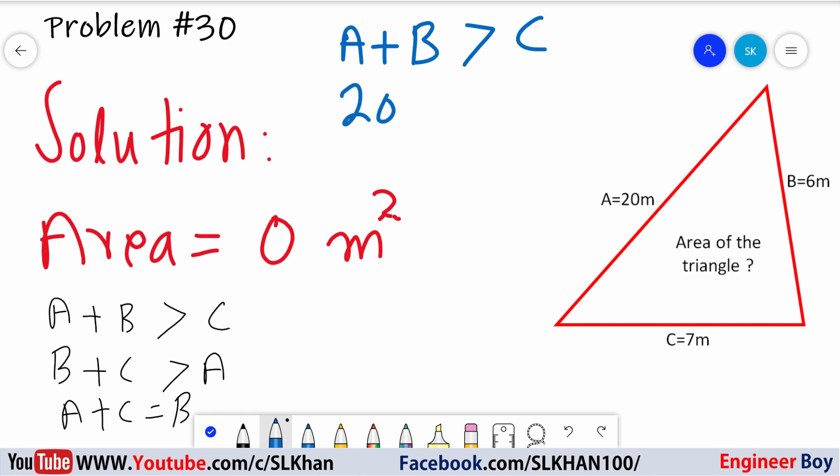26 is greater than 7, but if you see C plus B, that also must be greater than A. So C that's 7 plus B that's 6 which is 13, and that's not greater than 20.